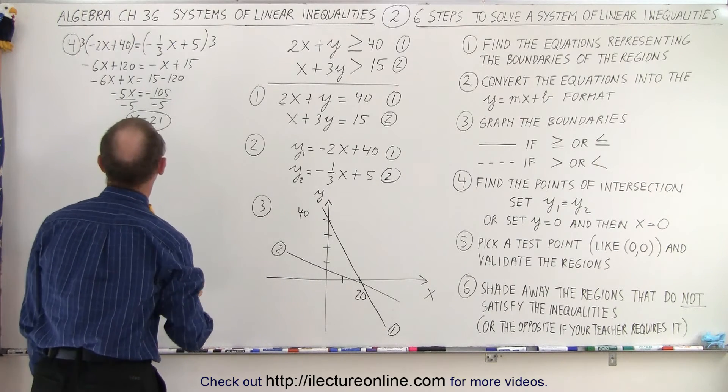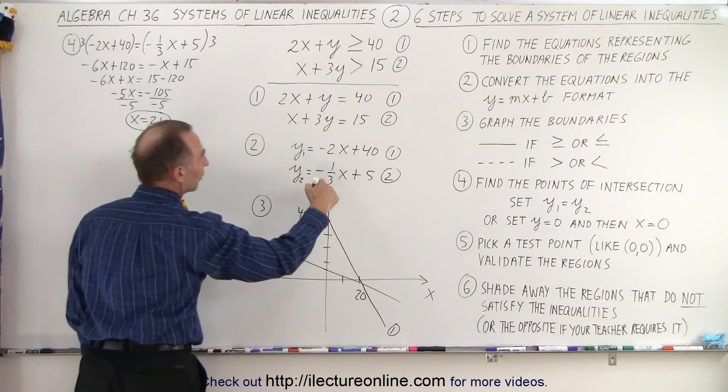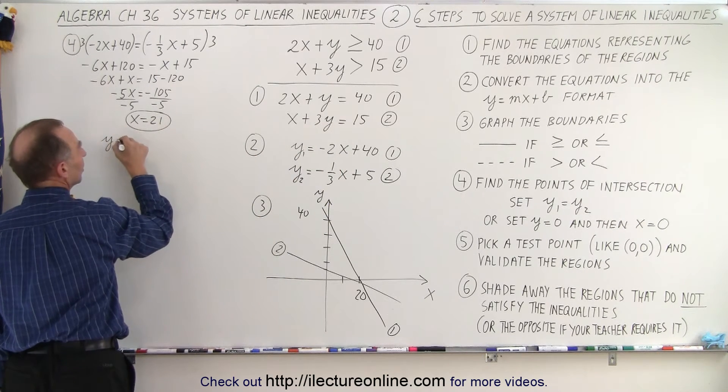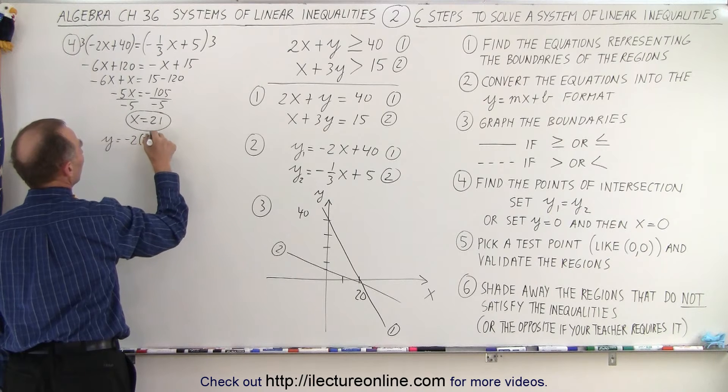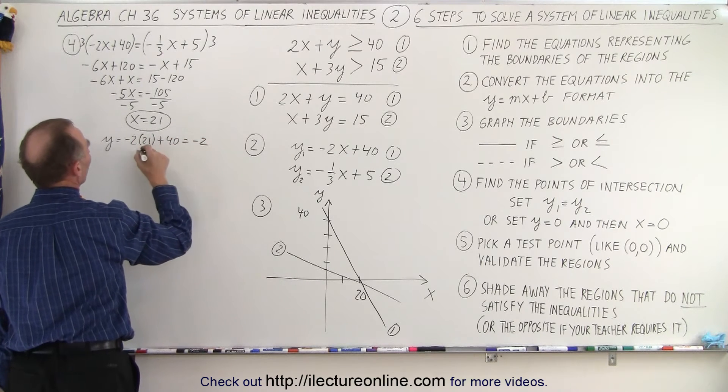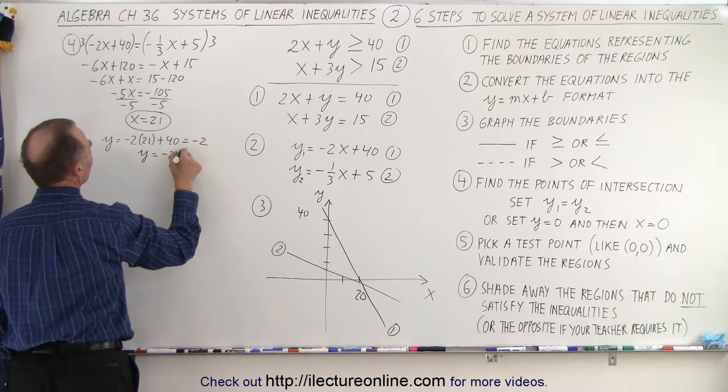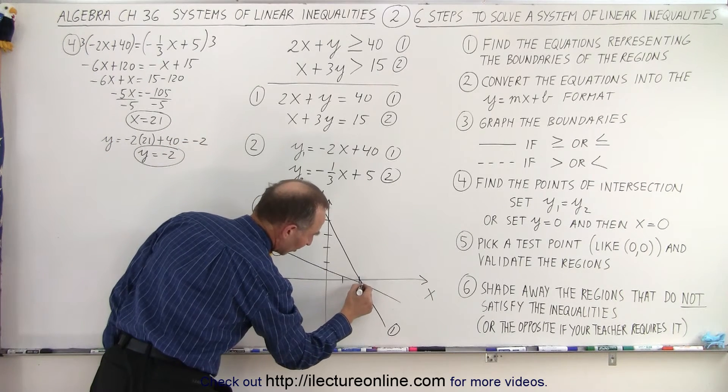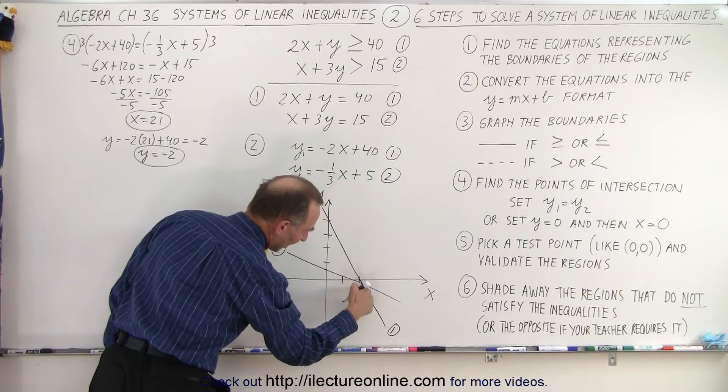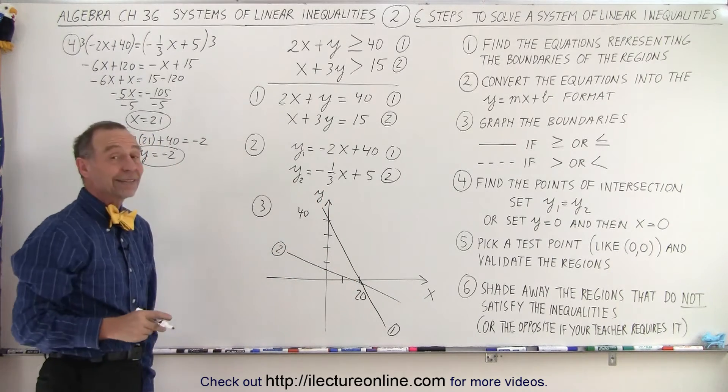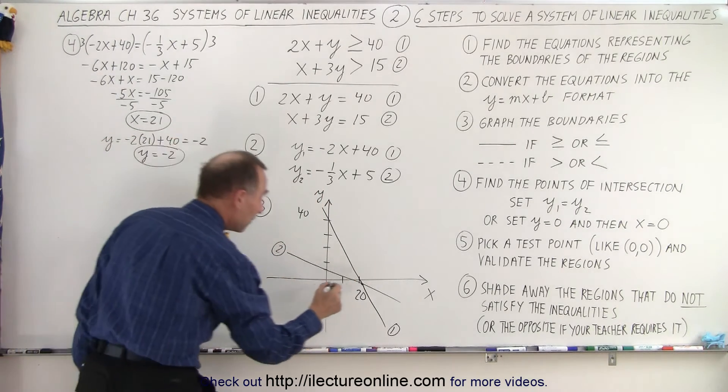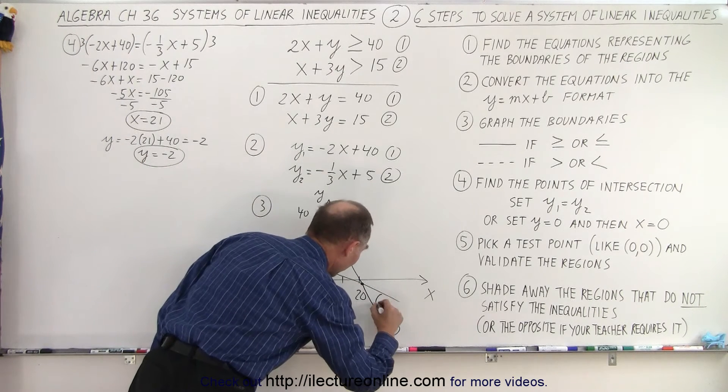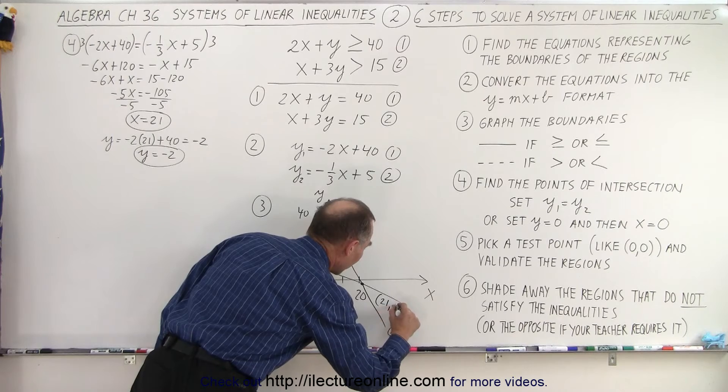Divide both sides by negative 5. And we get x is equal to 21. So if x is equal to 21, and we plug that into one of our two equations right here, so we say that y is equal to negative 2 times 21 plus 40, which is negative 2, or y is equal to negative 2. So if we take a look here, the point of intersection is just past the 20 point and 2 below the x-axis. It's actually not a bad guess in my drawing there, so that the point of intersection is 21 comma negative 2.